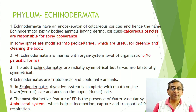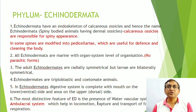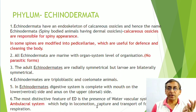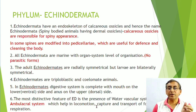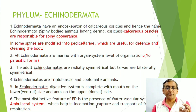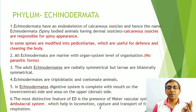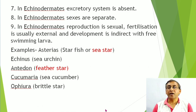The most important character of Echinodermata is the presence of the water vascular system, also known as the ambulacral system. This system is helpful in locomotion, capture and transport of food, and respiration — three functions as per NCERT. Very importantly, the excretory system is absent in echinodermates.